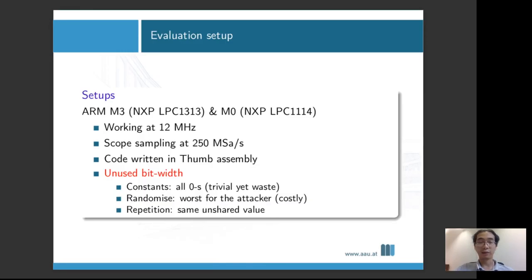We're going to have an experiment setup with ARM M0 and M3 cores, both from NXP. Our cores are working at 12 megahertz. Our scope is sampling at 250 mega samples per second. All of our target code are written in thumb assembly, so it works on both ARM M0 and M3. One of the things I would like to stress is in the share slicing schemes, if you're using D shares, only four pieces of the bit width is actually defined. All the other 28 bits are completely undefined, completely up to the engineers to decide what to put in there.